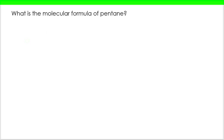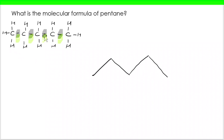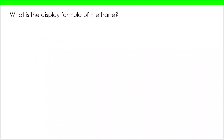Let's now try pentane. My display formula shows that I have four carbon-carbon bonds, so that's all I'm going to draw — four sticks to represent the four bonds. How about methane? That's slightly tricky. Methane has no C-C bonds, so actually we don't have a skeletal formula to draw. Technically it would be a dot, but you wouldn't be expected to draw it — it wouldn't be represented in that way.